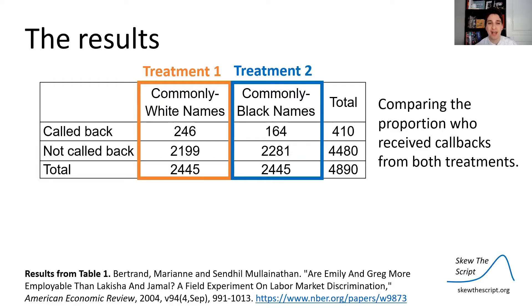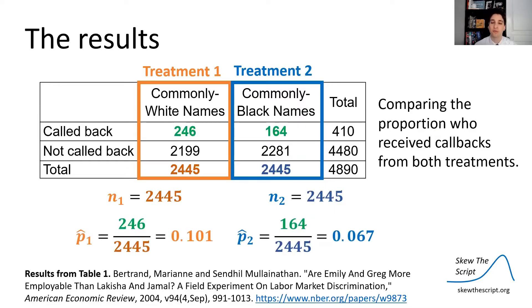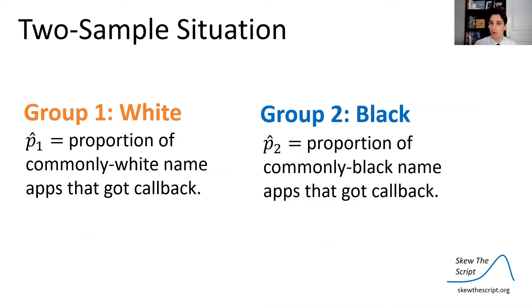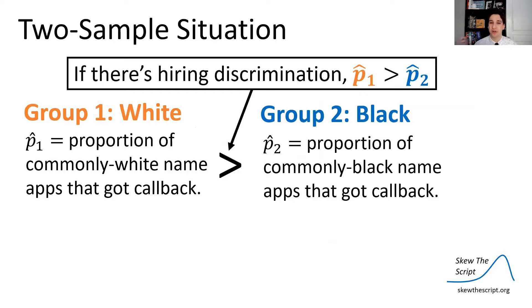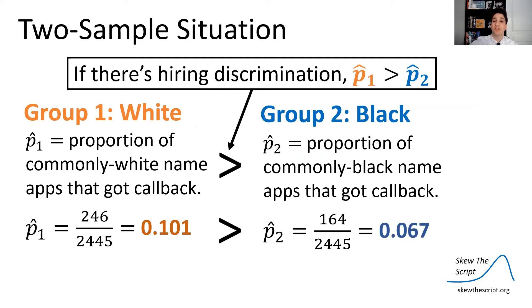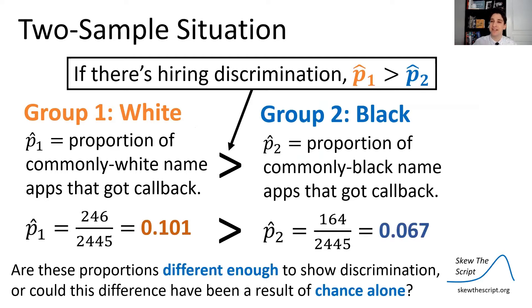Here were the results from the study. And we say treatment one, group one, was the commonly white names on the resumes. Treatment two was the commonly black names on the resumes. And they had a sample size of 2,445 employers in both. They found the callback rates was higher for the commonly white resumes. Specifically, that difference was about 3.4%. So if there's hiring discrimination, you would expect the proportion of callbacks to be higher for the white name group. And we saw that in the data. But the question we want to ask statistically is, are these proportions different enough to show discrimination?